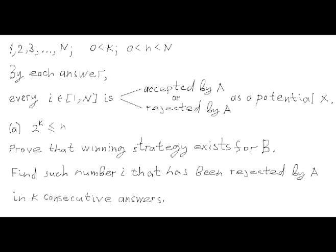The first observation is that each answer by player A adds some information about every integer number i from 1 to capital N. Each number is either accepted by player A as a potential target number X or rejected. The winning strategy for player B is to keep track of rejected numbers and identify a number that has been rejected in K consecutive answers, so that if it is rejected in answer number K+1, it can be eliminated as a potential number X, since the real target X cannot be rejected in K+1 consecutive answers — that would be equivalent to lying more than K times in a row.